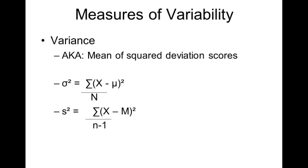So the top formula here is the variance for a population. The bottom formula is the variance for a sample. They both do the same thing, and we'll just look at the top one, the population variance, to help us understand what this formula is doing.